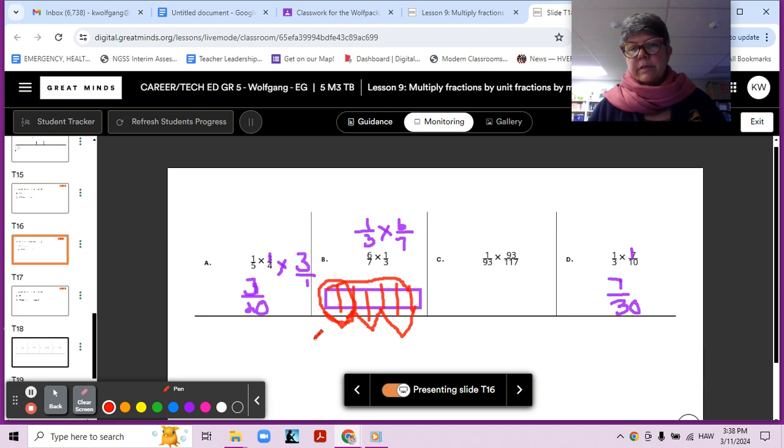So two of them. Two what? Two sevenths, right? One third of six sevenths would be two sevenths.